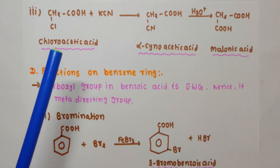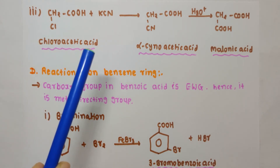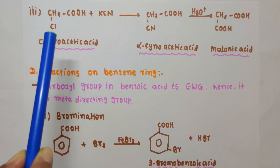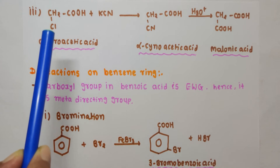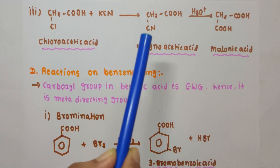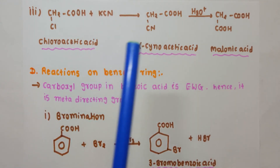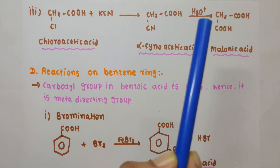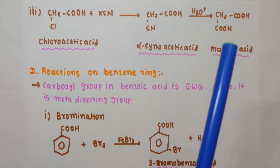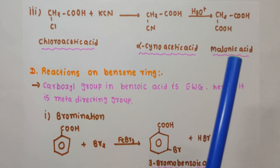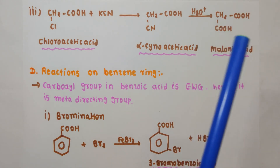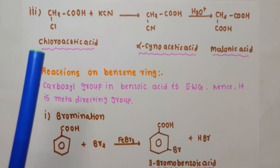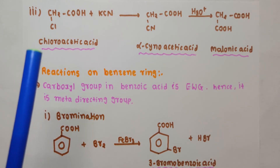A frequently asked conversion in board exams is acetic acid to malonic acid. First, do the HVZ reaction on acetic acid to get chloroacetic acid. Then react with KCN — nucleophilic substitution replaces Cl with CN to give NCCH2COOH (alpha-cyanoacetic acid). Hydrolyzing the CN group converts it to COOH, giving HOOCCH2COOH, which is malonic acid (propanedioic acid). These conversions are asked directly in many exams.